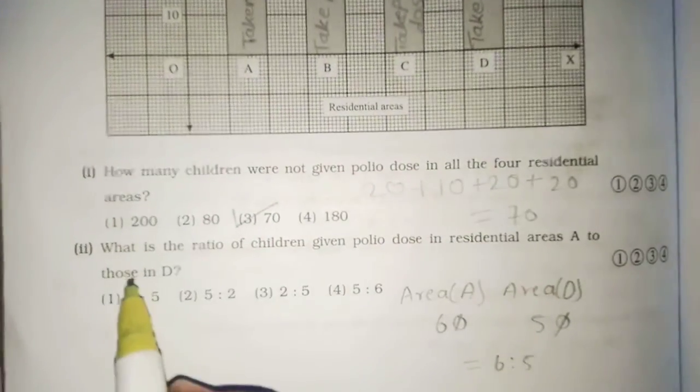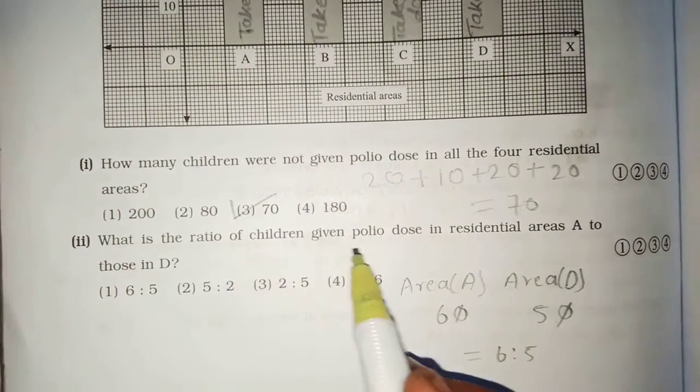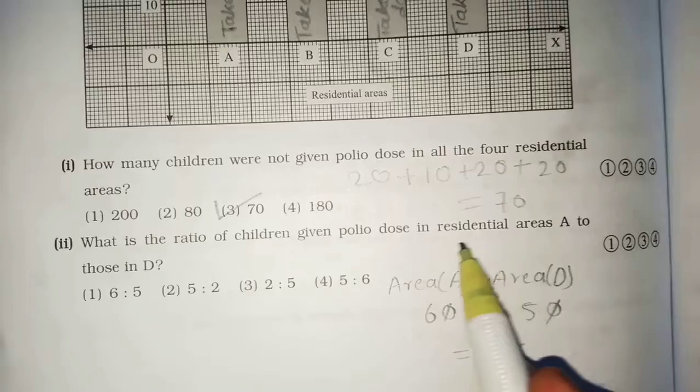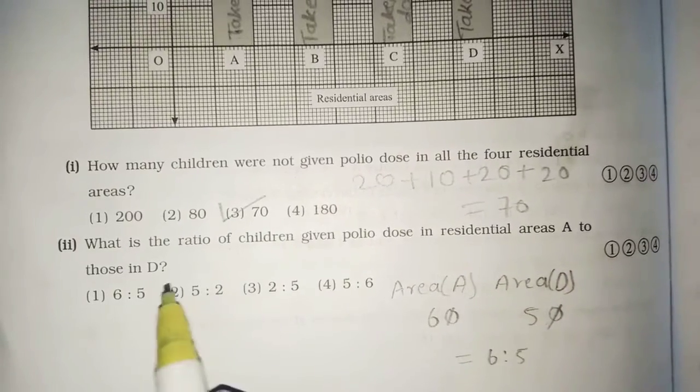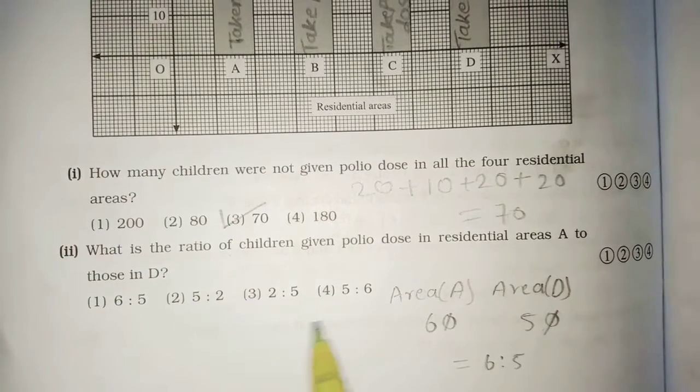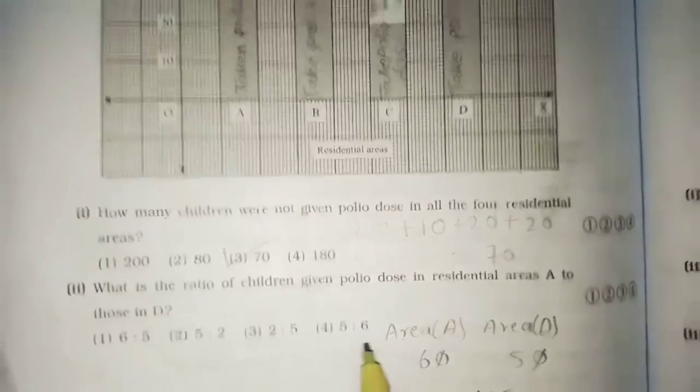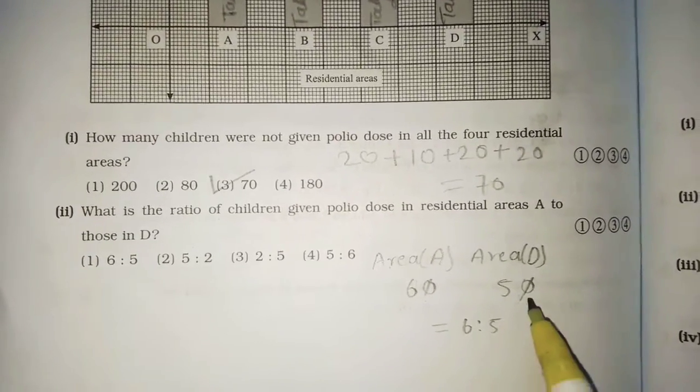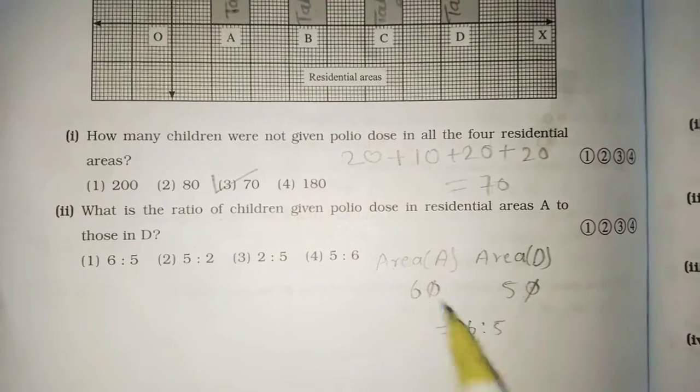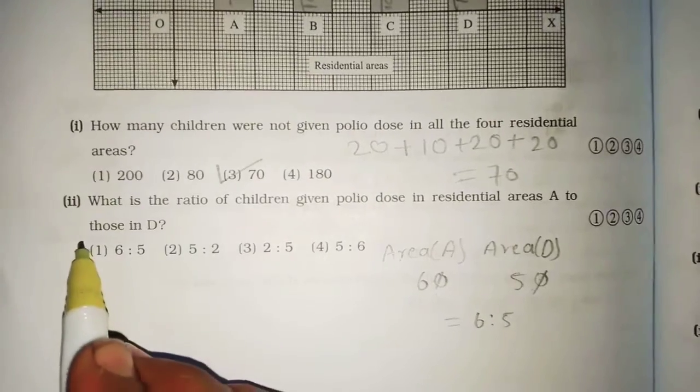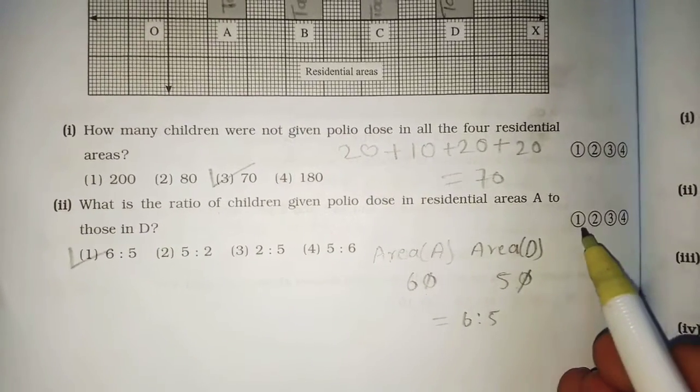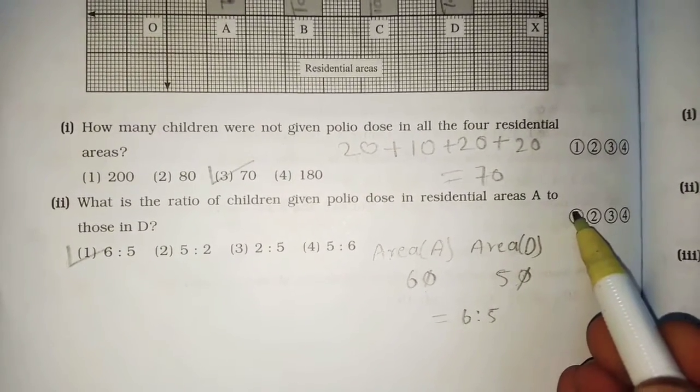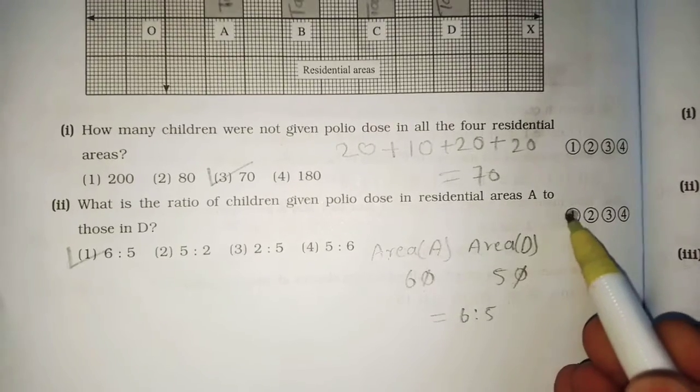Second. What is the ratio of children given polio dose in residential area A to dose in D? Area A मध्ये 60. And area D मध्ये 50. The ratio of children is 6 by 5. So, 6 by 5.